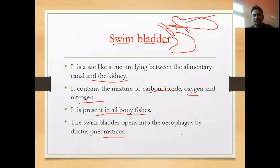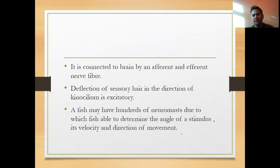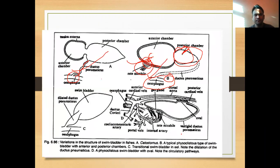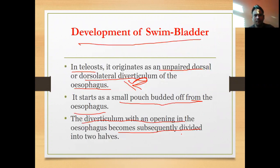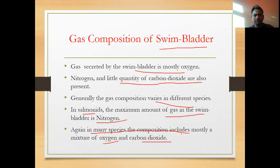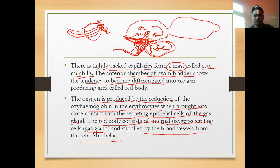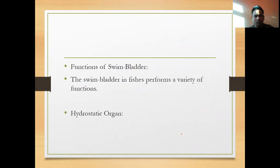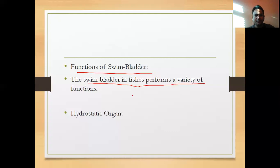The function of the swim bladder: it generally helps in swimming. The swim bladder in species performs a variety of functions. Its primary function is as a hydrostatic organ, helping the fish maintain buoyancy.